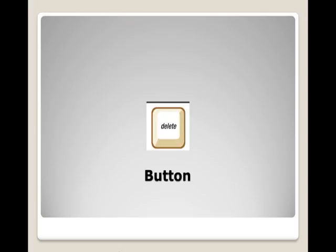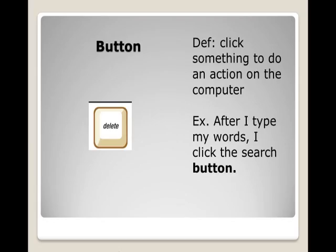Button. Definition: Click something to do an action on the computer. Example: After I type my words, I click the search button.